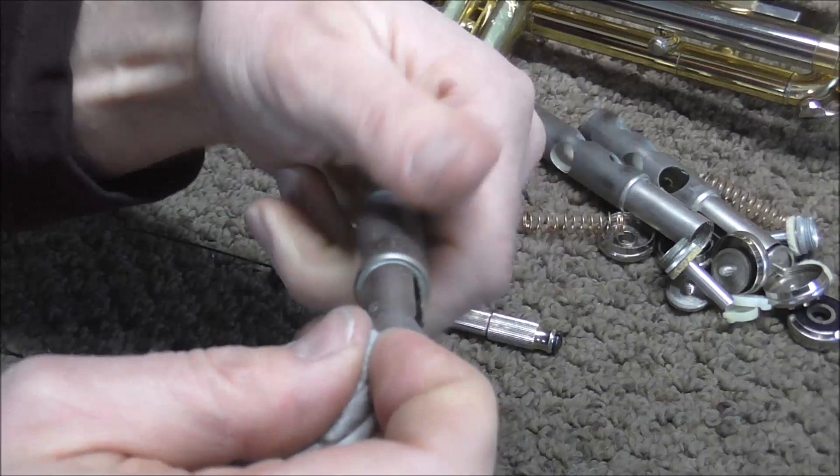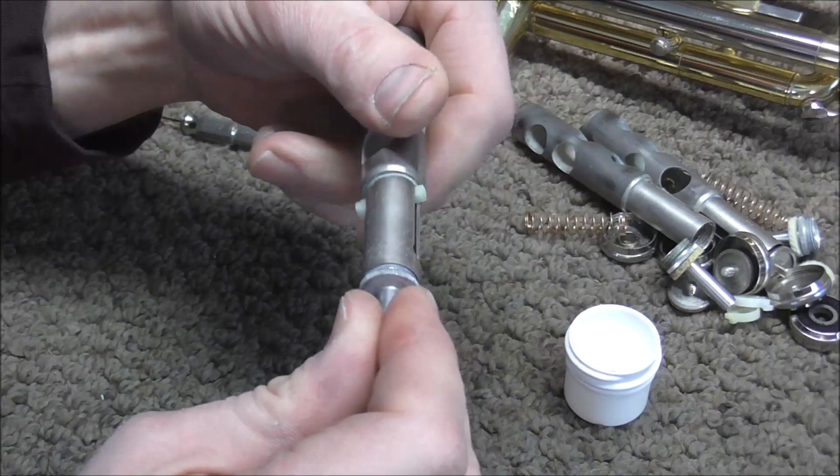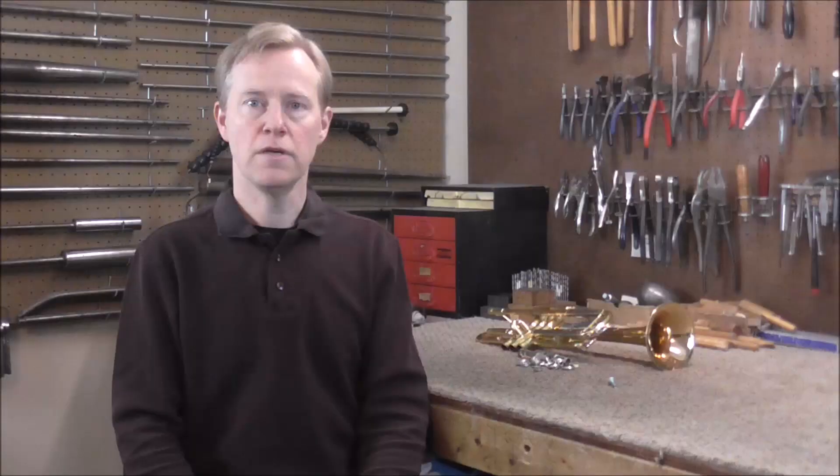When you put the valve stem back on the valve take some tuning slide grease and put a little bit on the threads of the valve stem. And that will help it not to corrode quite as fast next time. Usually that will be enough to fix the problem of a stuck valve stem.